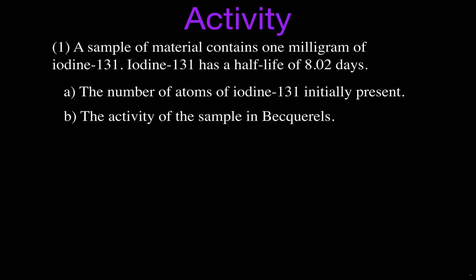Like I said, we're going to do four different examples. I also made some videos explaining what activity is as it relates to radioactive decay, and you can link to those up here in the upper right-hand corner with the I button. But in this video, we have a sample of material that contains one milligram of iodine-131, and it gives us the information that iodine-131 has a half-life of 8.02 days. And we want to know the number of atoms of iodine-131 that we initially have.